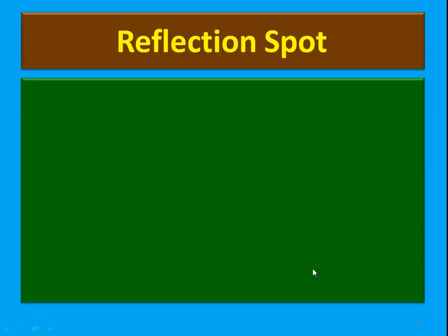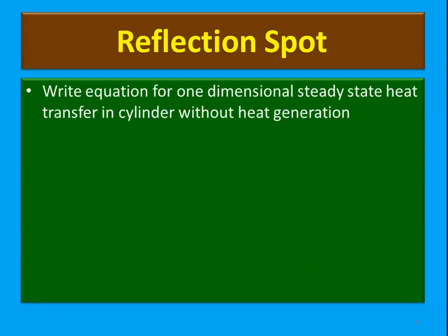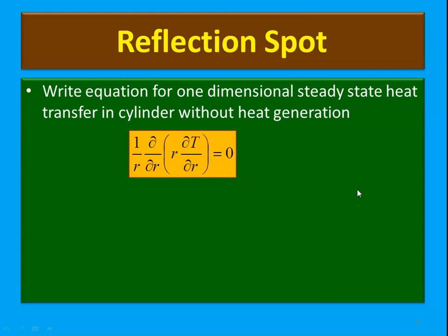We will stop here for a reflection spot, recalling the portion discussed over the past 12 minutes. Question: Write the equation for one dimensional steady state heat transfer in a cylinder without heat generation. Take a moment and write the answer. The governing equation is: 1/r · ∂/∂r(r · ∂T/∂r) = 0.